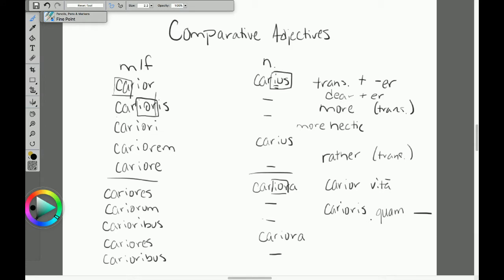You can also see when the first element to be compared is not in the nominative or accusative case. When quam is used, the same construction and or case are used as the element before it. So in this case, the item after quam would also be in the genitive singular case because our carioris is in the genitive singular case. So these are your two options for giving more information about what you're comparing.